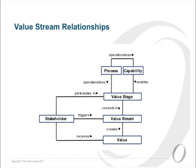What we're here to talk about is value streams. A value stream is obviously trying to create value — value that a particular stakeholder receives. It is triggered by a particular stakeholder, and each stage may have one or more different stakeholders participating in it. A business process operationalizes capabilities which enable a value stage. So this tries to show you some of the relationships.